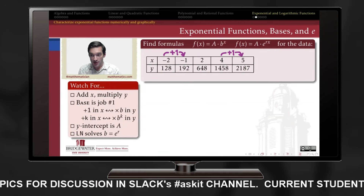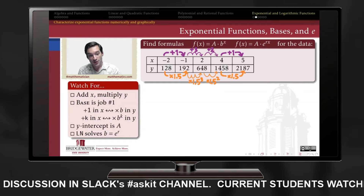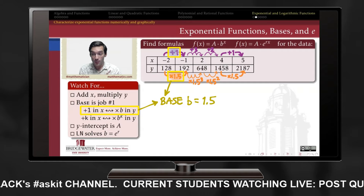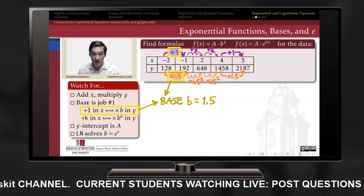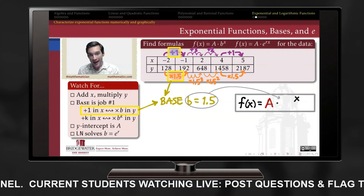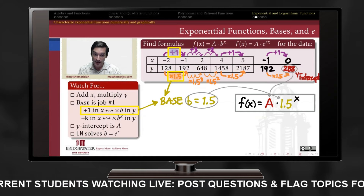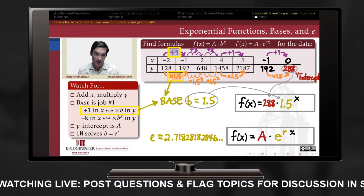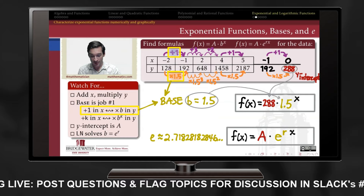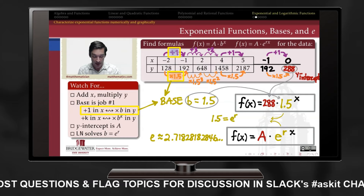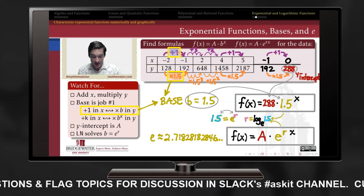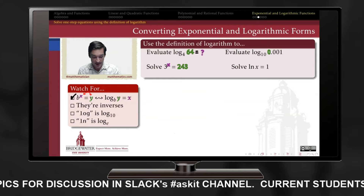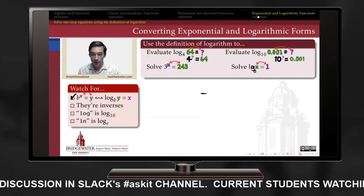An exponential function correlates addition and subtraction in its input with multiplication or division in its output. Every increase of 1 in x gives rise to a multiplication in y by a constant b called the base — the exponential analog to slope. The base is frequently rewritten as a power of the natural number e, and we find the rate constant r using a natural logarithm. The logarithm is defined as the inverse of the exponential: the base-b log exactly undoes what a base-b exponential does.